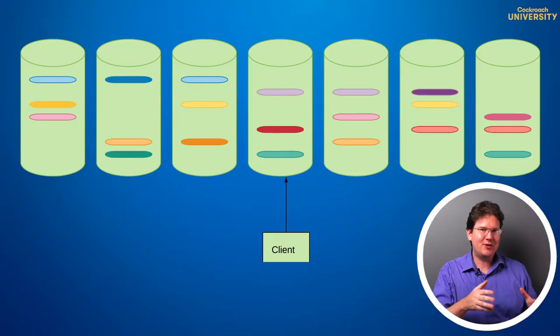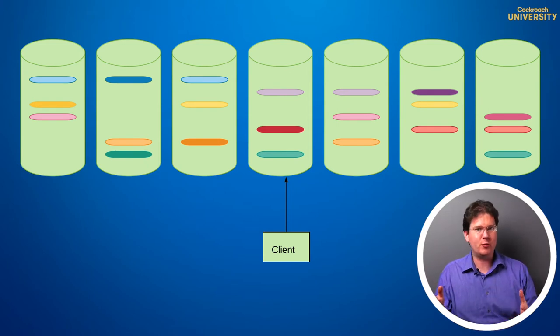Let's consider a cluster with seven nodes, still with a replication factor of three for every range. The replicas are distributed more or less evenly, and so are the leaders.